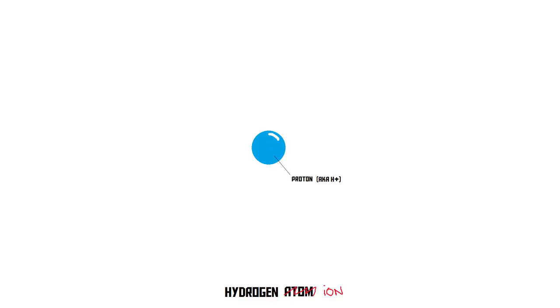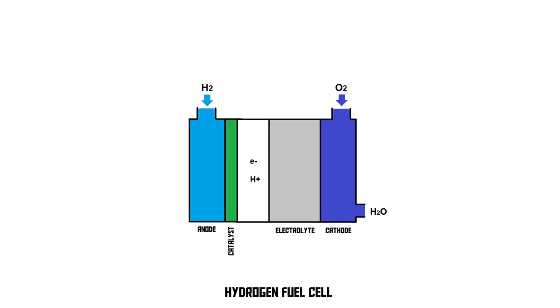There is, however, a solution, which is the green layer in this drawing — the catalyst. What the catalyst does in this case is split off the electrons from the protons. So the electrons of the hydrogen atoms are removed from their protons. Now we've got a bunch of protons and electrons. The protons, also known as H+, can get right through the electrolyte because they're positive, and they can meet with the oxygen on the other side.